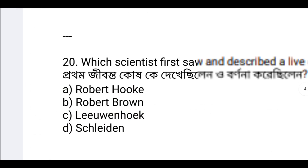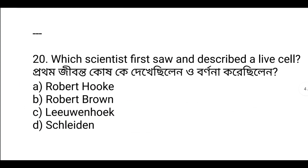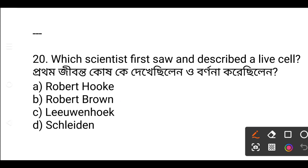Which scientist first described the leaf cell? Option number C — Robert Hooke. Robert Hooke described the leaf cell.